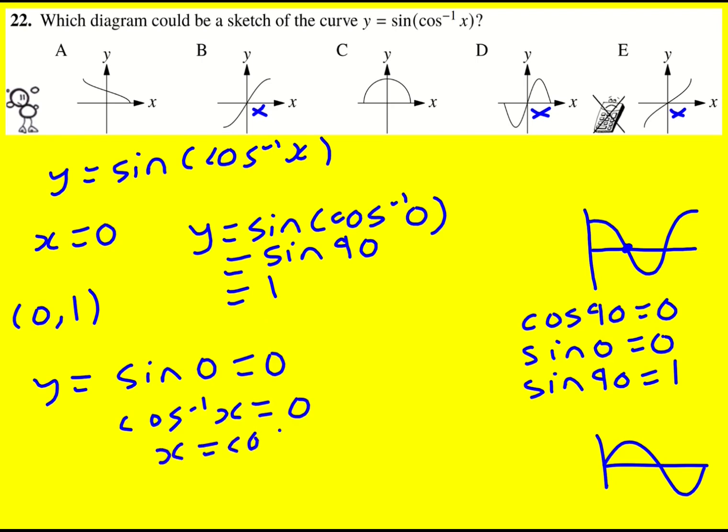So I'm thinking cos of what gives zero, and that's going to be when x is equal to cos zero, or one. Okay, so when x is one, I've kind of worked my way backwards here, but if x is one, I'm going to get y equals sine, I'm just writing out in full now, of cos to the minus one of one, which is actually sine of zero, which is zero.